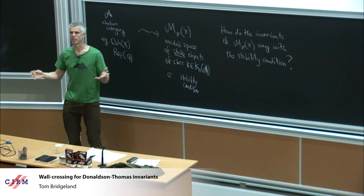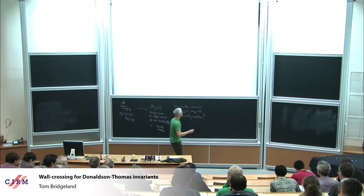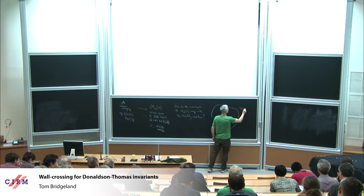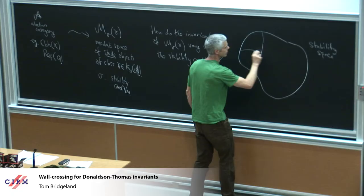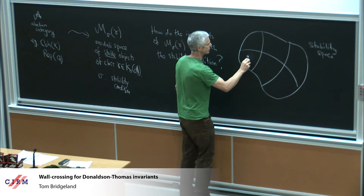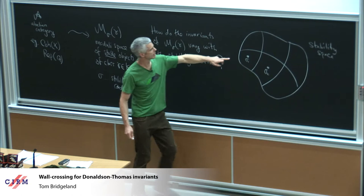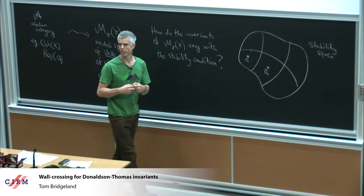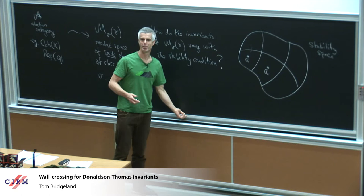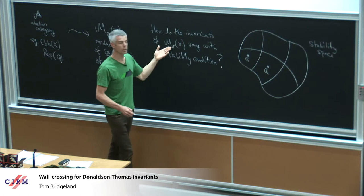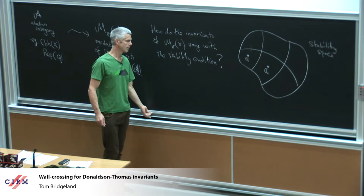By invariants I mean probably numerical invariants like the Euler characteristic — how does it vary? The sort of picture you end up with is you have some parameter space, a stability space, which breaks up into chambers. You have this wall-crossing behaviour where the moduli space is constant inside each chamber but as you cross one of these walls something happens — something very brutal could happen, it could become the empty set. So these moduli spaces change highly discontinuously as you cross these walls, and the associated invariants also change.